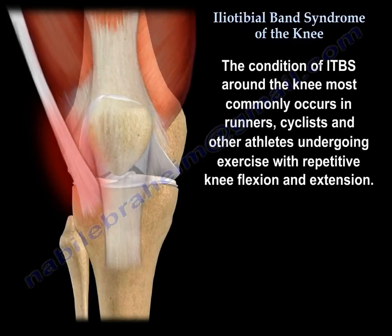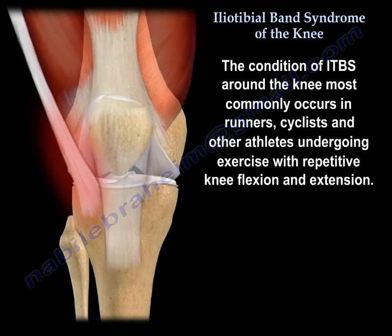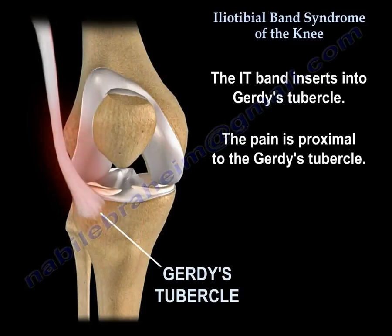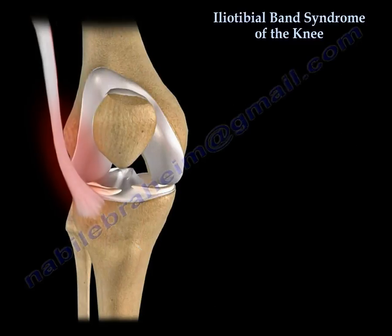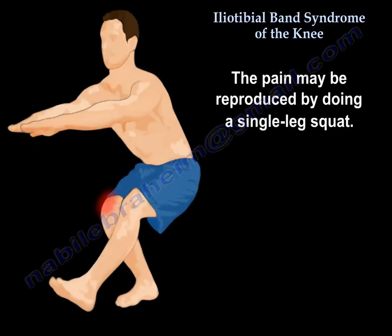Ileotibial band syndrome around the knee most commonly occurs in runners, cyclists, and other athletes undergoing exercise with repetitive knee flexion and extension. The Ileotibial band inserts into Gerdy's tubercle, and the pain is located proximal to Gerdy's tubercle. The pain may be reproduced by doing a single leg squat.